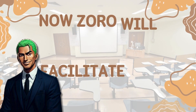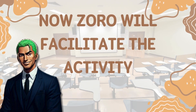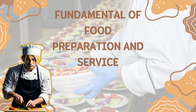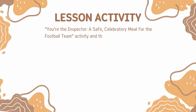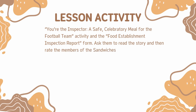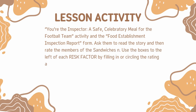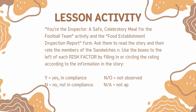For this lesson activity, the teacher will provide each student with a copy of the learning activity sheet titled 'Fundamentals of Food Preparation and Service: You're the Inspector — A Safe Celebratory Meal for the Football Team,' along with the Food Establishment Inspection Report form. Students will read the story and then rate the members of the sandwiches. Use the boxes to the left of each risk factor by filling in or circling the rating: Y equals yes, in compliance; NO equals not observed; N equals no, not in compliance; NA equals not applicable.